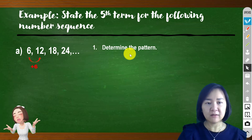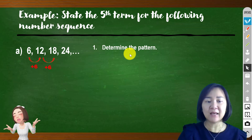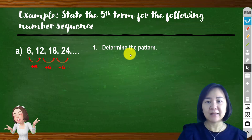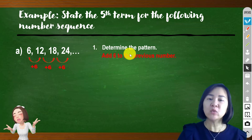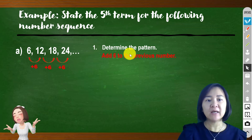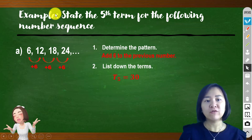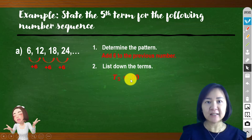We check the consecutive terms to see if the pattern is the same. 12 plus 6 equals 18, and 18 plus 6 equals 24. So the pattern is: add 6 to the previous number. After identifying the pattern, to determine the fifth term, we add 6 to the fourth term: 24 plus 6 equals 30. So the fifth term is 30.